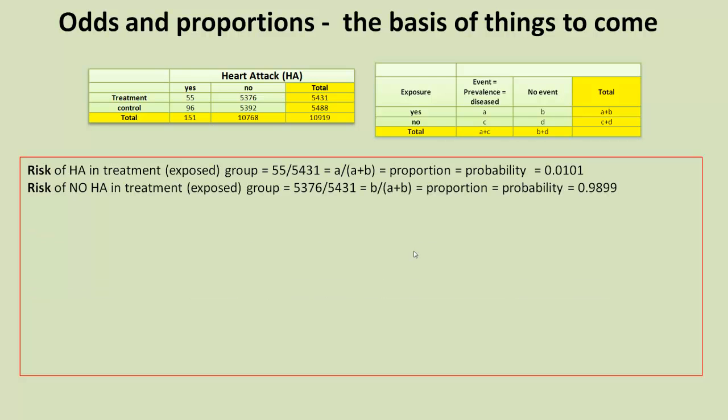Similarly, we can look at the risk of not having a heart attack in the treatment group. And that is just the upper value, B, if you think of the cells. And that gives 0.98, 98% of the people who didn't suffer a heart attack, who were in the treatment group.